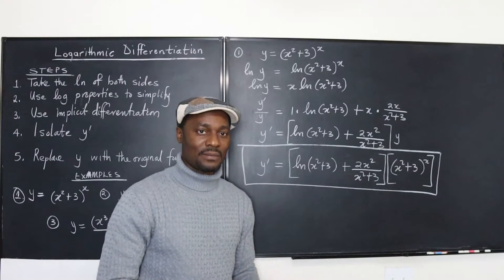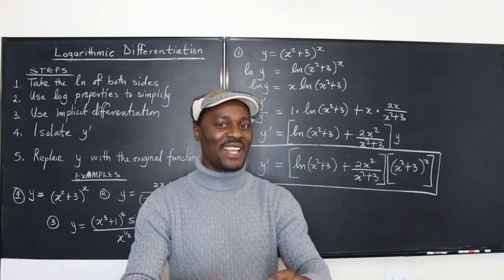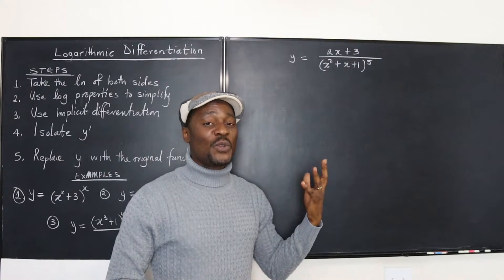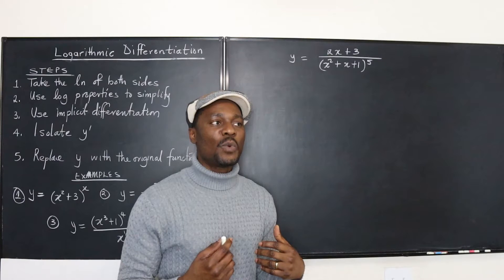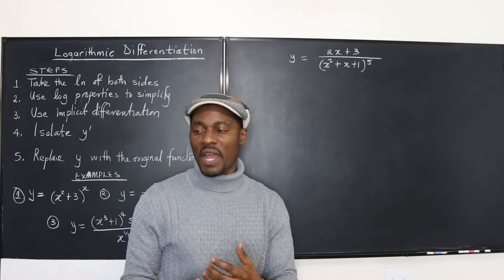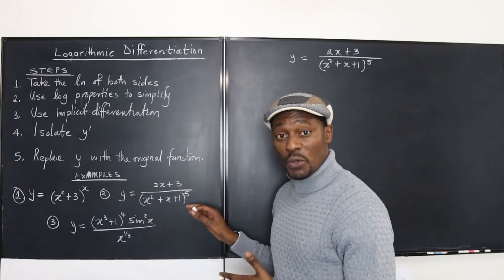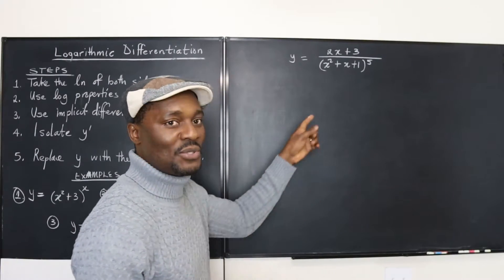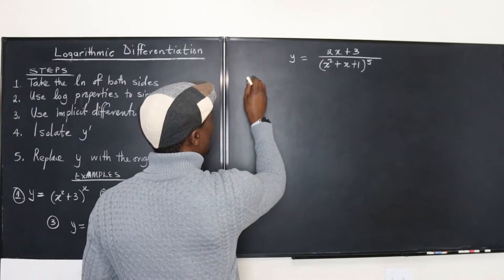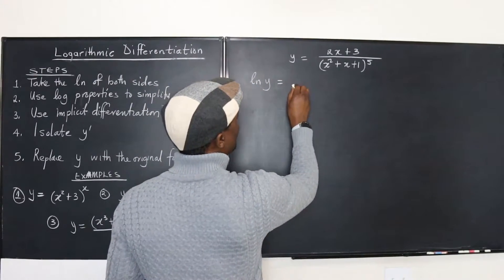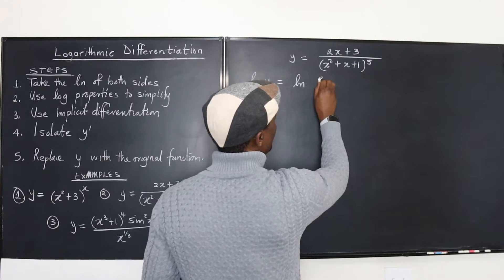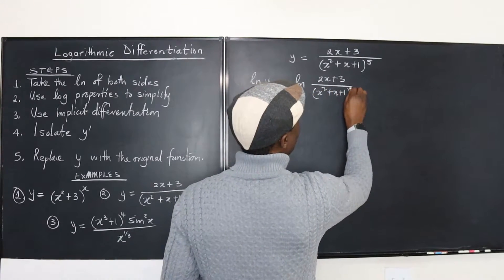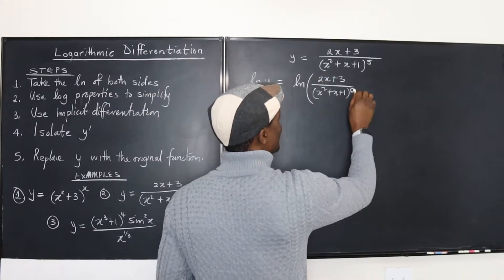There is no other way in calculus one or two. For someone used to implicit differentiation, logarithmic differentiation is always preferable. For someone who likes the quotient rule, once you see this problem you can go ahead and use it. But let's see what it looks like if we apply these steps. Let's take the natural log of both sides: ln of y is equal to the natural log of 2x plus 3 over x squared plus x plus 1 to the fifth.